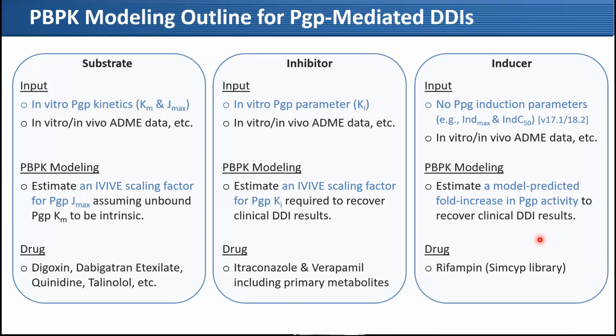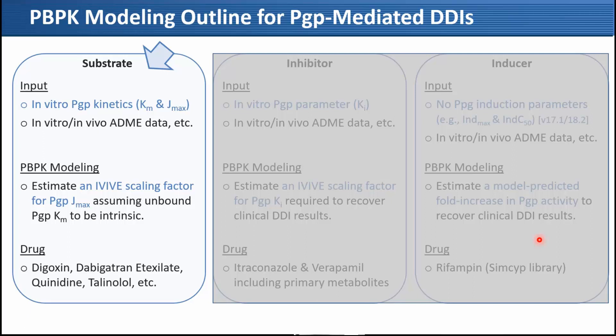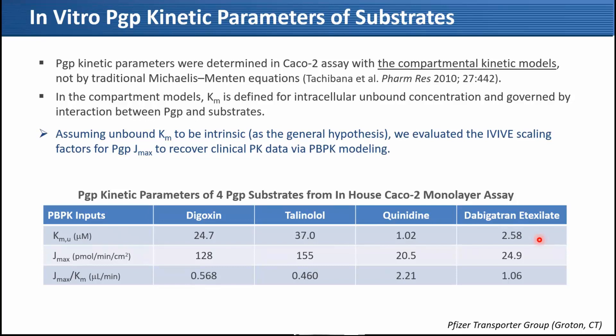For substrate modeling, we need in vitro P-gp kinetic parameters. We selected four P-gp substrates: digoxin, talinolol, quinidine, and dabigatran etexilate. We used the KK2 assay to estimate these parameters using compartmental kinetic models, and assuming unbound KM to be intrinsic as a general hypothesis, we evaluated the IVIV scaling factor for P-gp Jmax to recover clinical PK data.